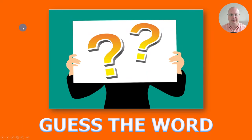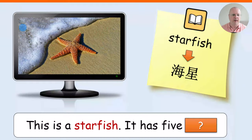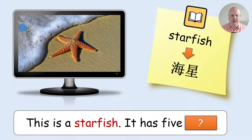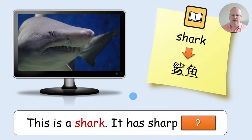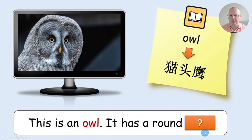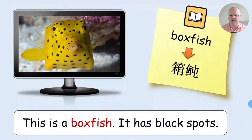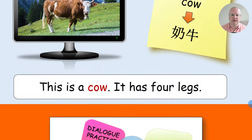The next activity is called Guess the Word — a vocabulary comprehension activity. You invite a student from each team and they have to guess the hidden word. Whoever says it first gets a point. Clues include: it has five arms; it has a shell; it has sharp teeth; it has a round face; it has black spots; it has four legs. If students were paying attention in class, they usually complete this activity quickly.